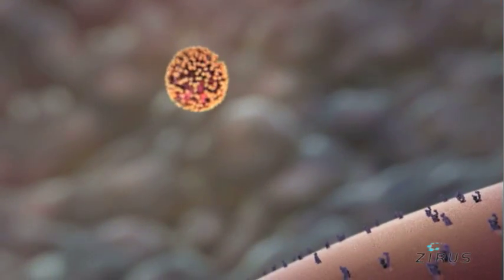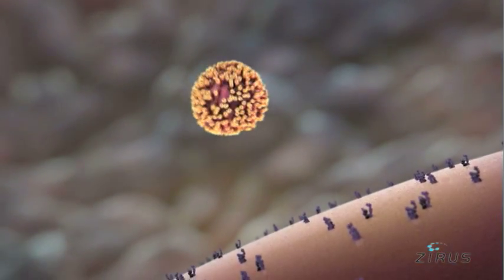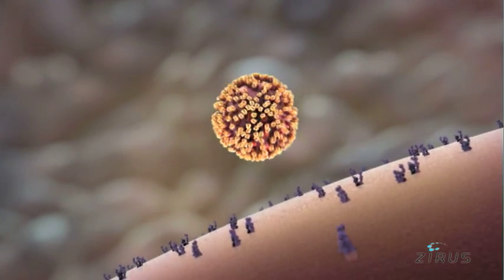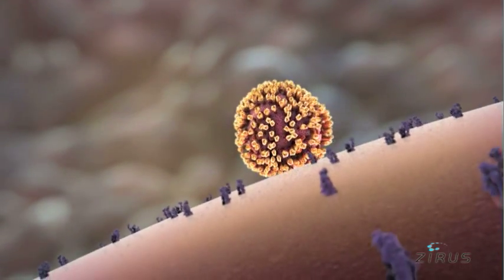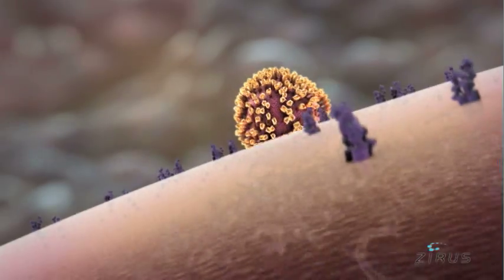Infection begins with attachment of virus proteins to a receptor on the surface of the host cell. The virus is then taken in the cell by receptor-mediated endocytosis.